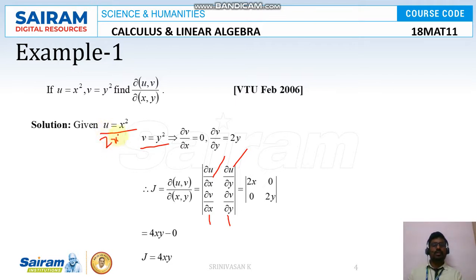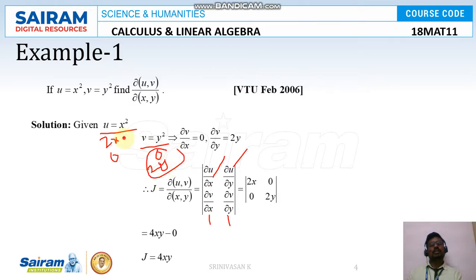∂u/∂y = 0 since there is no y term in u. ∂v/∂x = 0, and ∂v/∂y = 2y. Substituting all values into the matrix and performing cross multiplication: (2x)(2y) − (0)(0) = 4xy − 0. So the Jacobian equals 4xy.